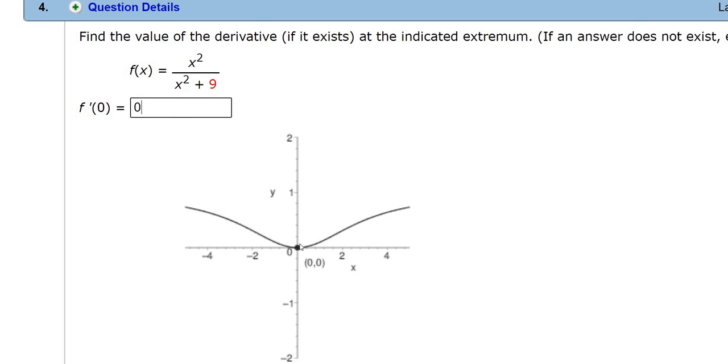The derivative is the slope of the tangent line. That is the key idea in differential calculus, which is mostly calculus 1. So the derivative is 0 because you have a horizontal tangent line.